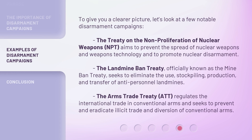The Treaty on the Non-Proliferation of Nuclear Weapons, NPT, aims to prevent the spread of nuclear weapons and weapons technology and to promote nuclear disarmament. The Landmine Ban Treaty, officially known as the Mine Ban Treaty, seeks to eliminate the use, stockpiling, production, and transfer of anti-personnel landmines.